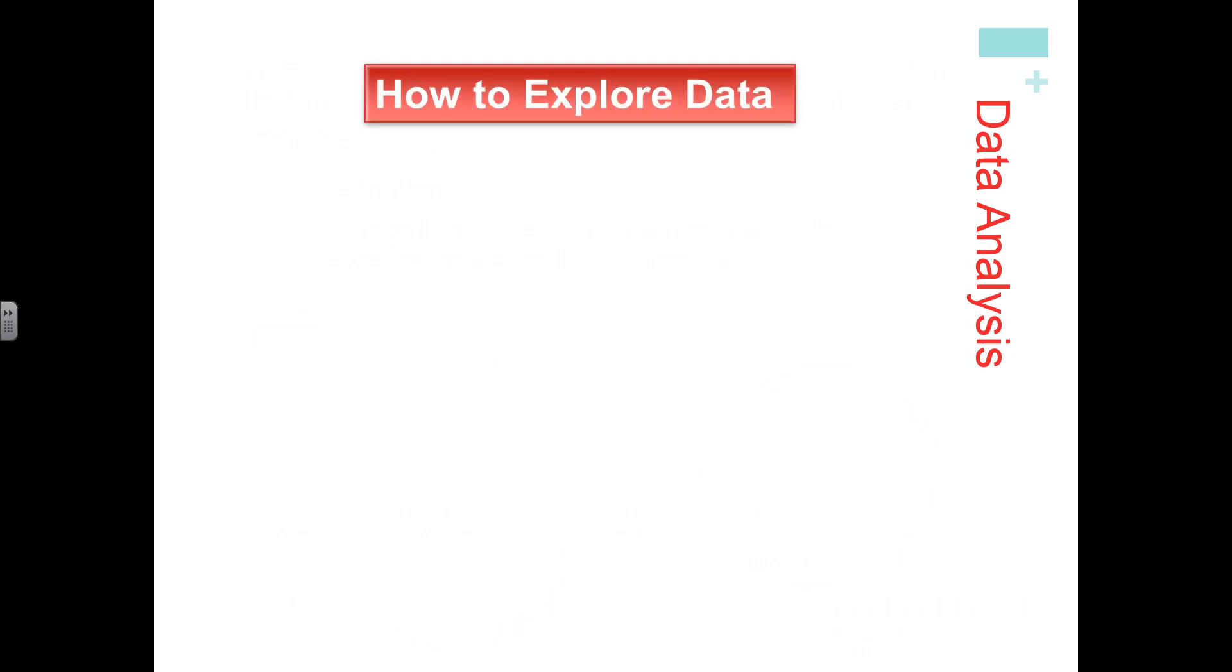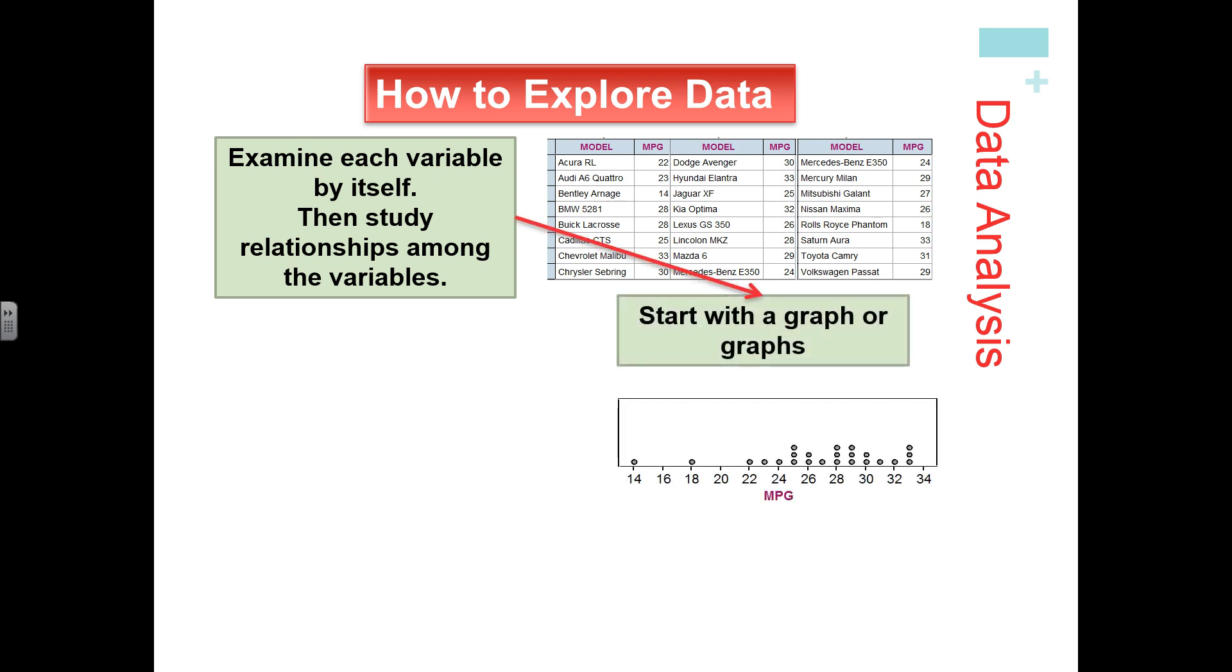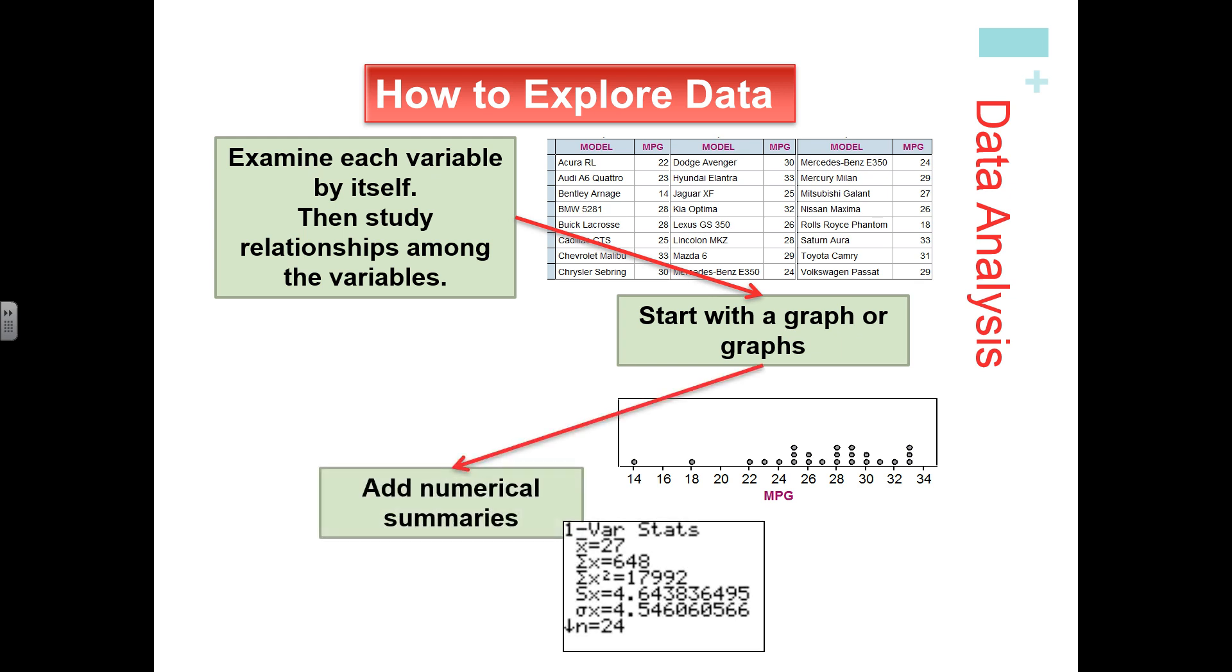To put it all together, how we're going to explore data in this class is we're going to examine each variable by itself and then look at the variables to find relationships amongst them. From there, we'll make either a graph or several graphs to analyze and see what the variable is trying to tell us. Then we'll find our numerical summaries like the mean, standard deviation, or variance to tie it all together.